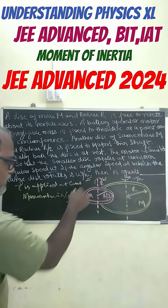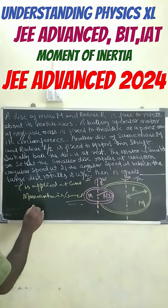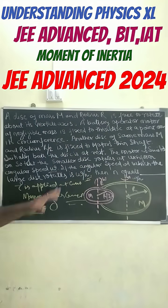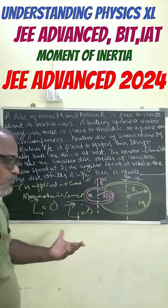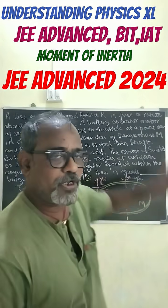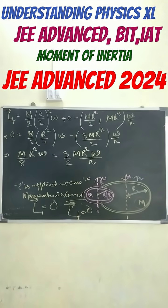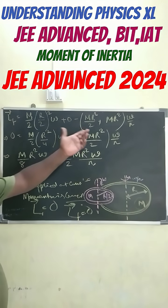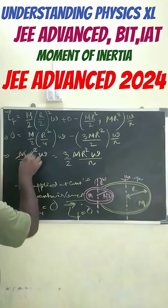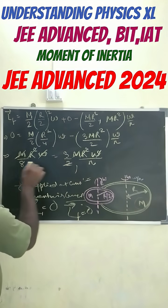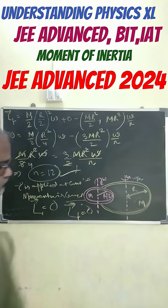Since both disks were initially at rest, the initial momentum equals zero, and therefore the final momentum also equals zero. Applying this conservation relation and simplifying — terms cancel, giving 4s are 12 — we get n equals 12 as the answer.